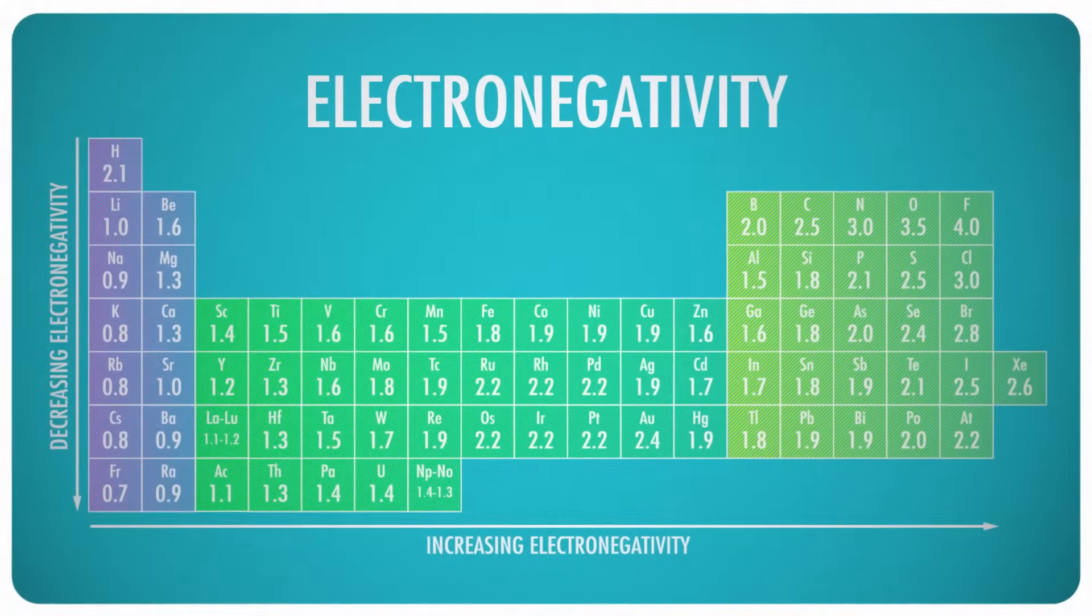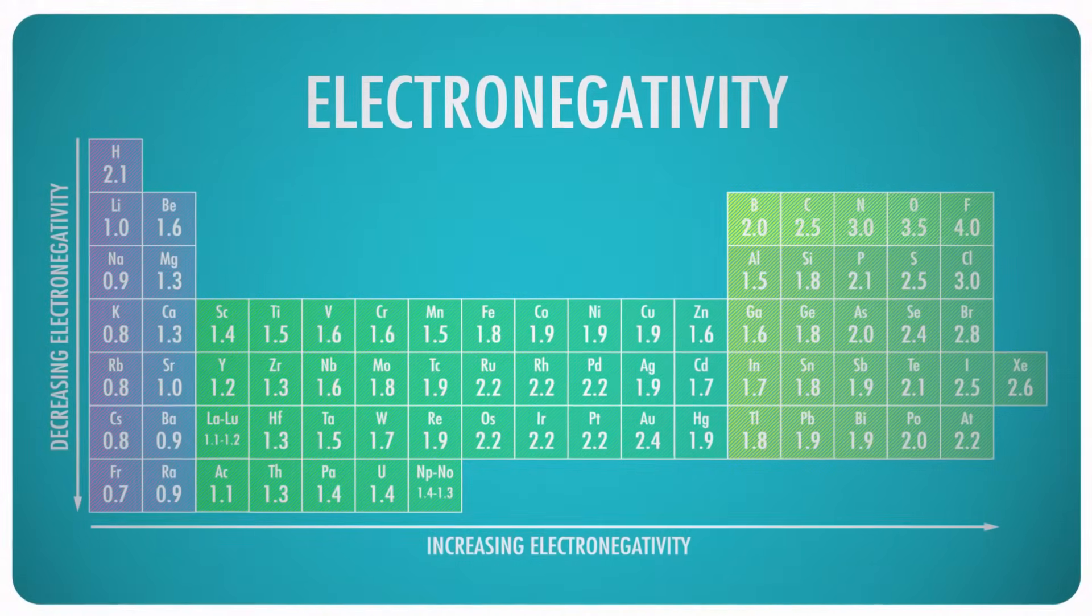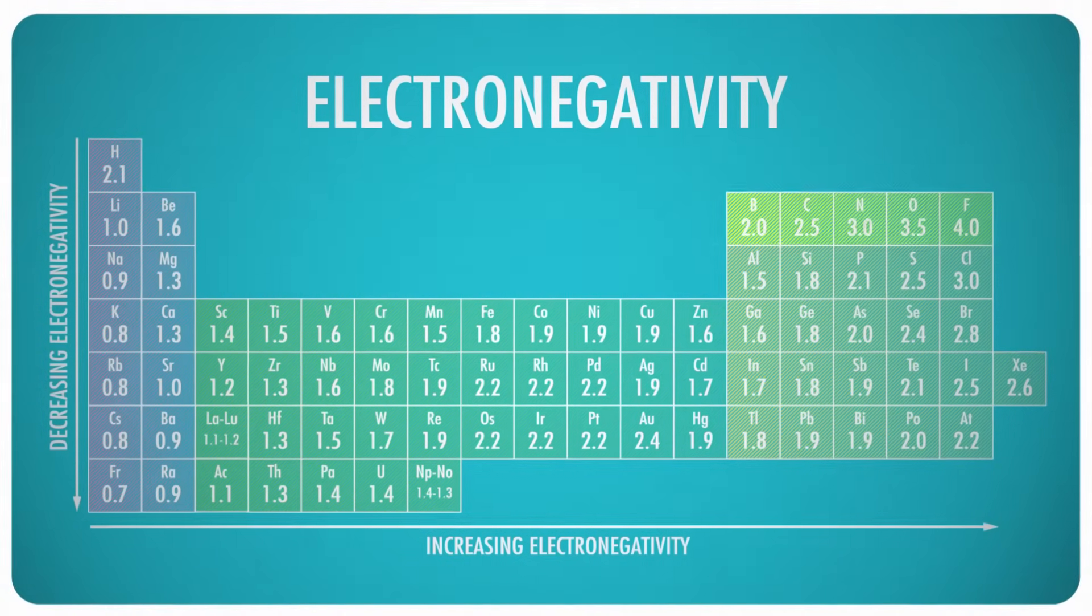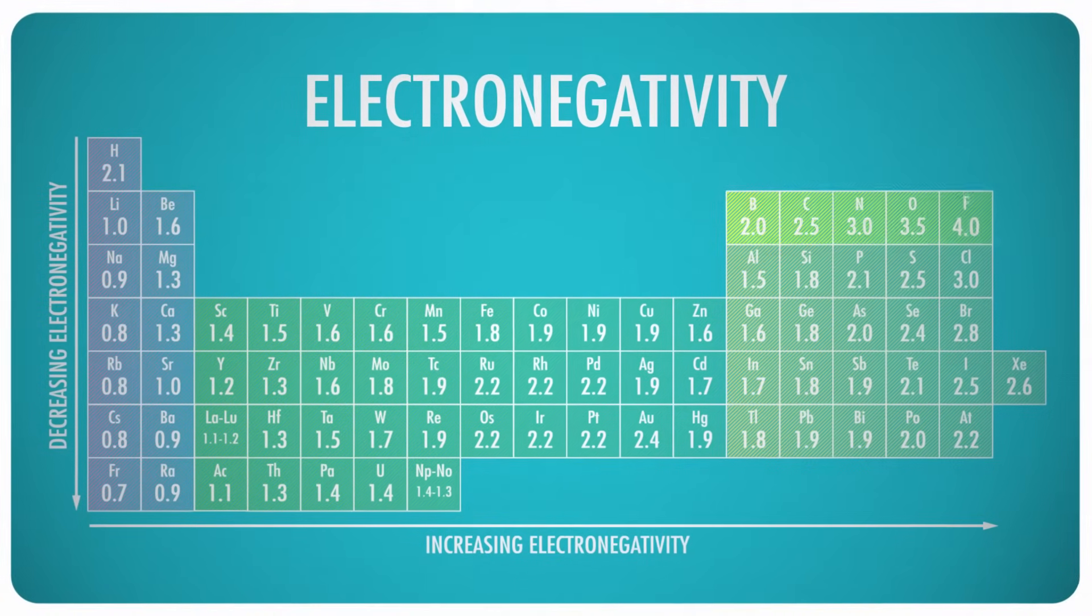Now, there are a number of other factors here, but just like the relationship between tweens and their latest boy band fixation, it's complicated and weird, and you probably don't want to think too much about it. But in this nice little map, you can see that the trend is pretty clear. The upper right is where all the superstars of electro fame are. Oxygen, nitrogen, fluorine, chlorine, and bromine are basically the one direction of the periodic table.